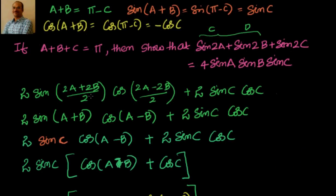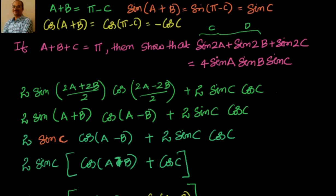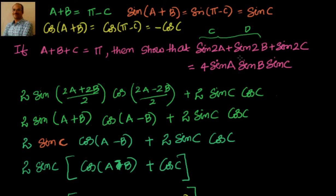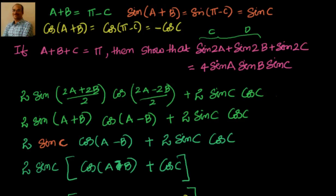Whatever the problem may be, in this type of transformation problem, we should first look at the first term and see how to get the second term so you can take something common, then apply the transformation. For the next video, try sin 2a plus sin 2b minus sin 2c — with the same condition where a, b, c are angles of a triangle — and we will solve it in the next video.